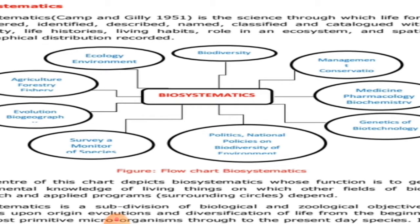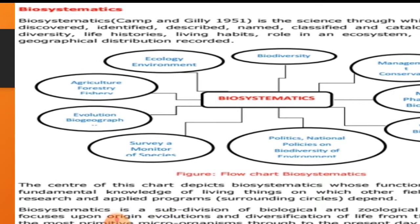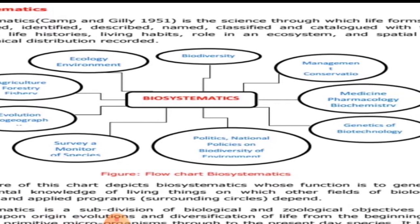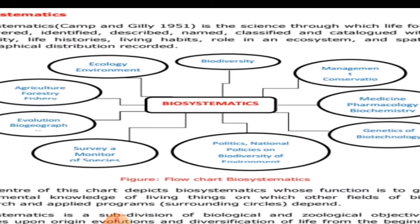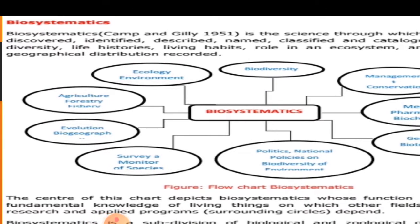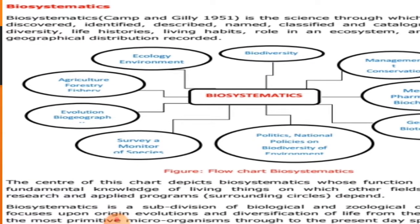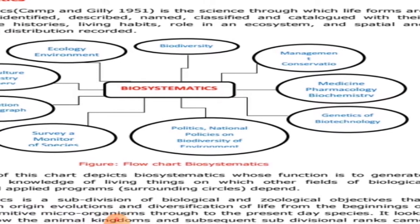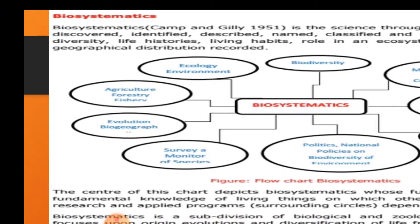پیارے بچوں، biosystematics ایک ایسی سائنس ہے جس کا فیلڈ بہت وسیع ہے۔ اس میں ہم کسی species یا life form کو پہلے discover کرتے ہیں، پھر اس کی identification ہوتی ہے، اس کی description کی جاتی ہے، اس کے بعد اس کا نام دیا جاتا ہے اور پھر اس کی classification کی جاتی ہے۔